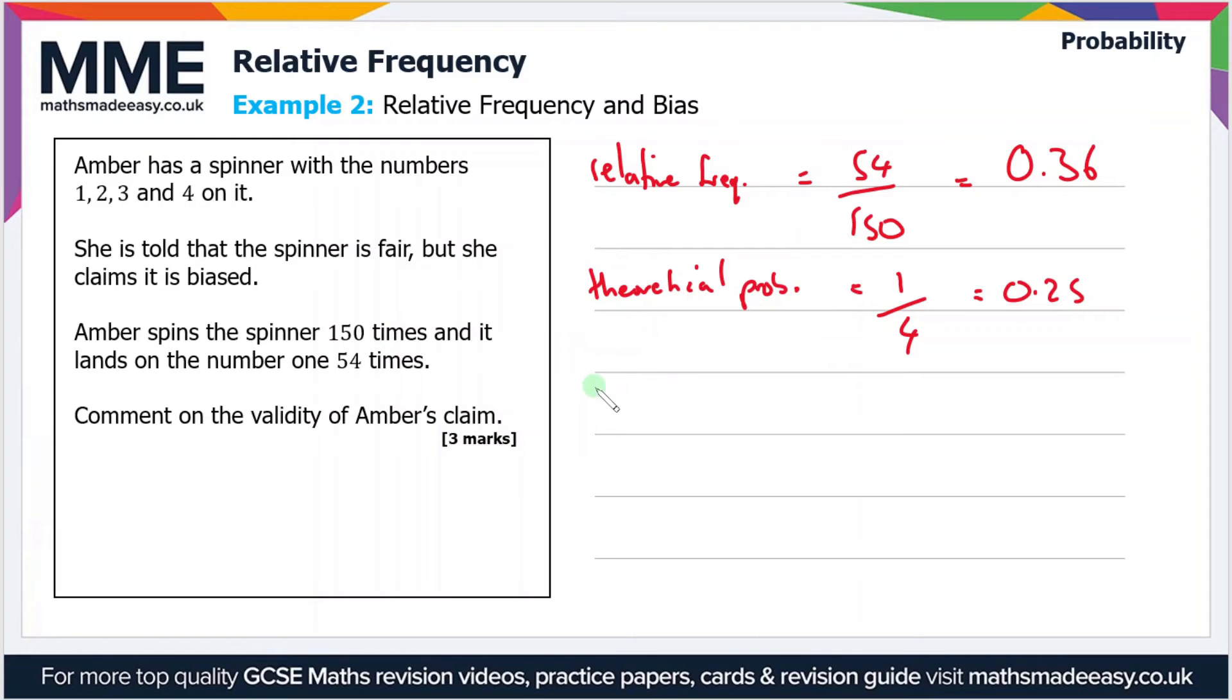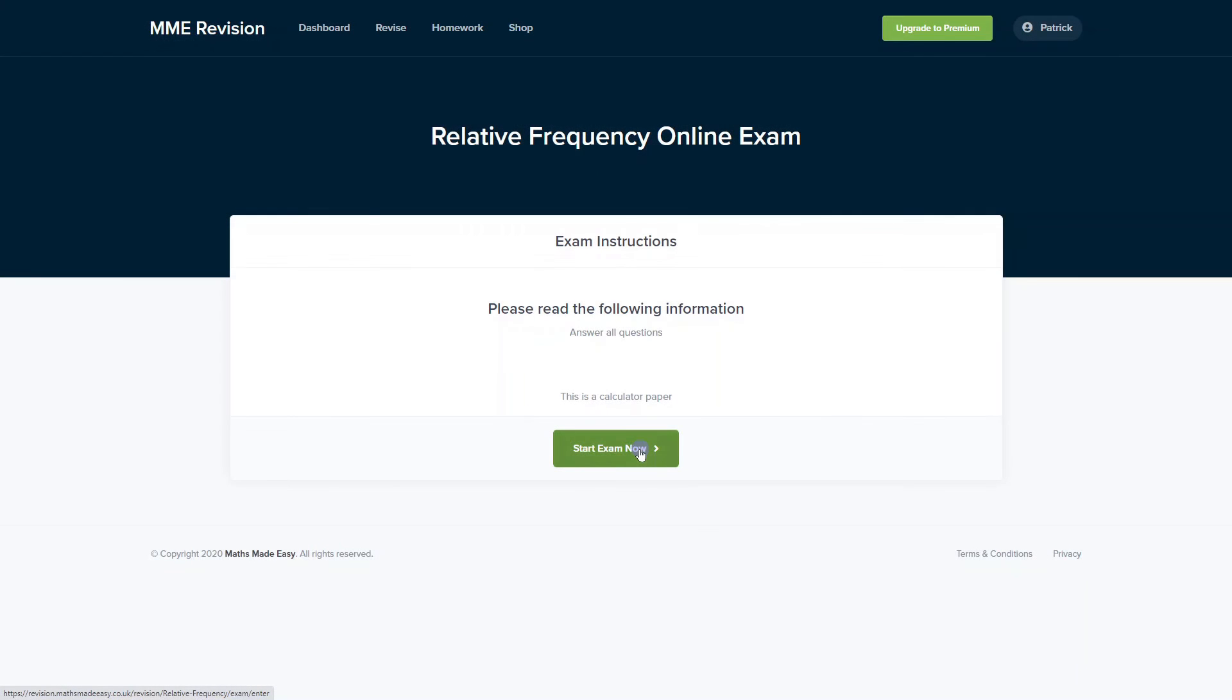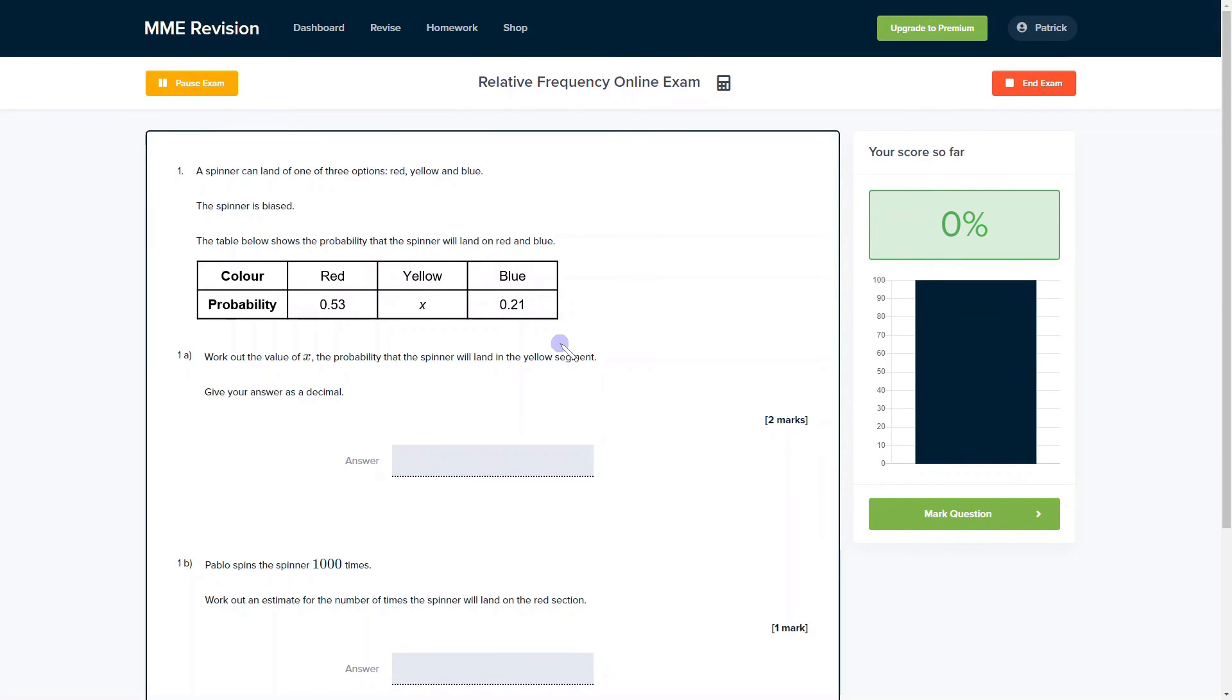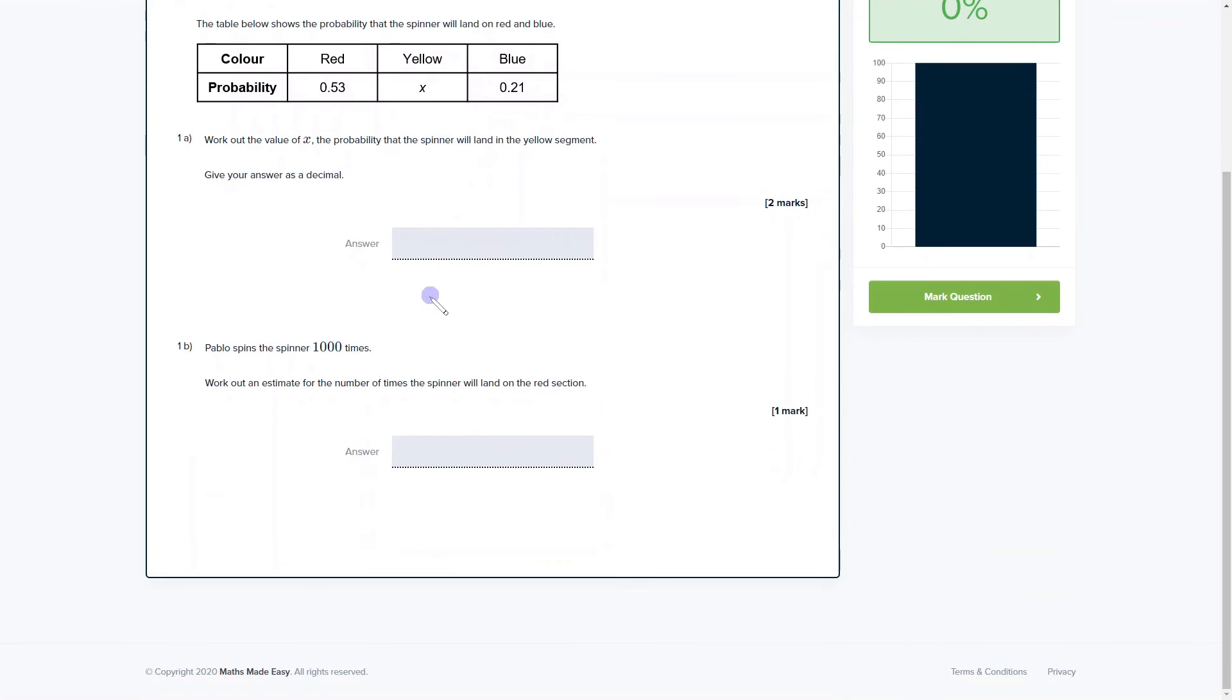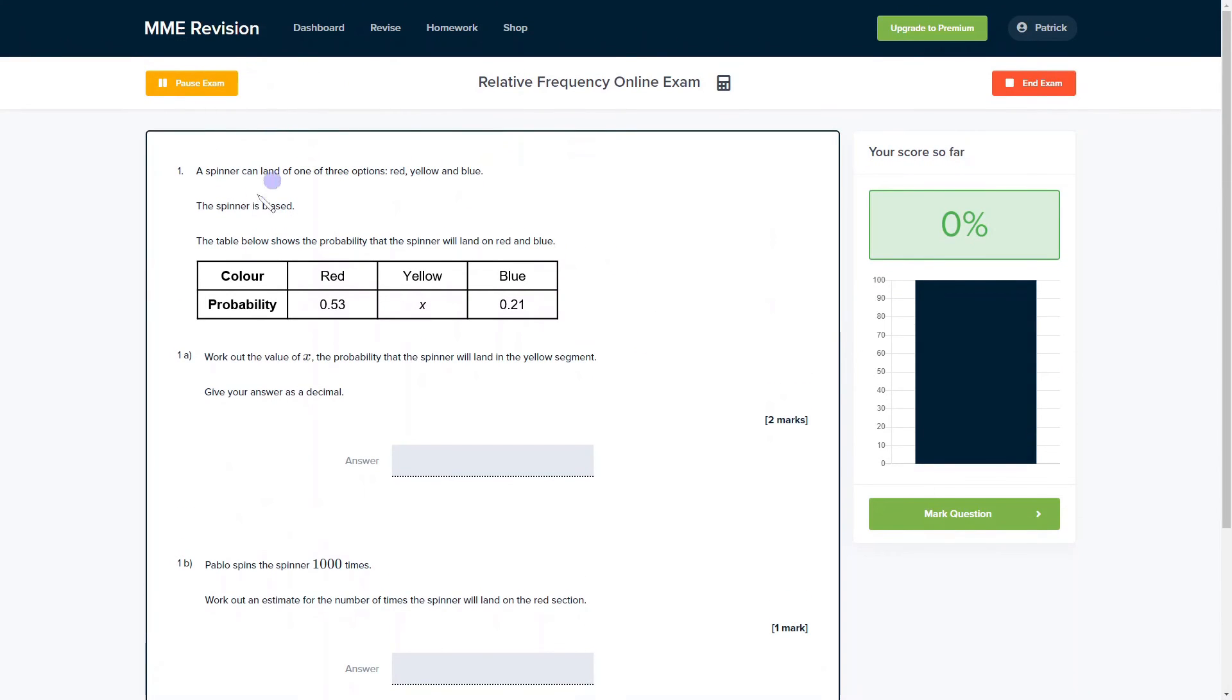If you want to get some practice with relative frequency questions, then why not have a go with our online exam? It's available through our revision platform. If you take the test, you'll find loads of different questions to have a go at, a variety of different question types, and you get instant feedback on all of it. If you want to keep track of your progress and find out where you need to improve, this is a really good way of doing so. If you're interested and want to take the exam, you can click the link below and it will take you straight over there.